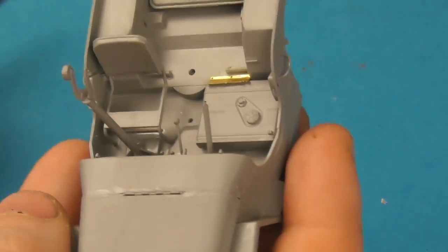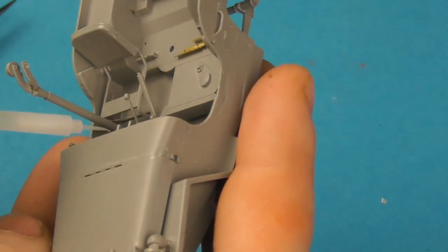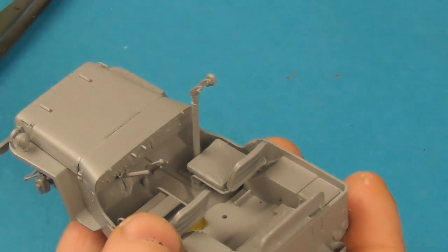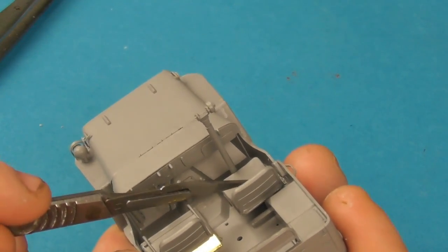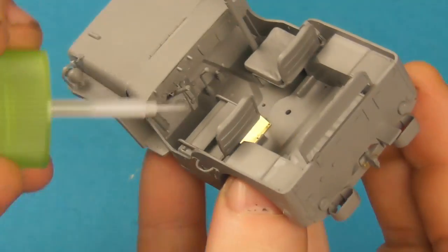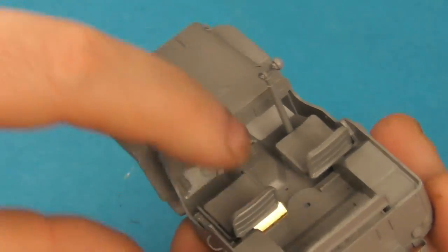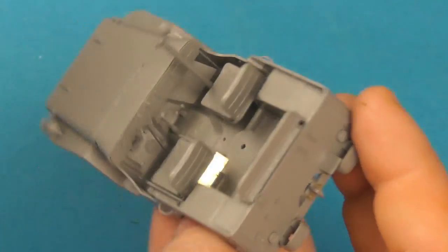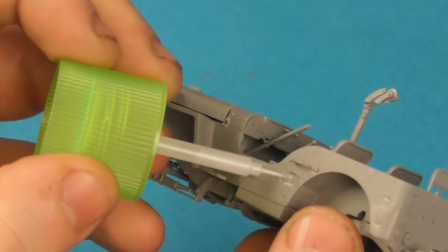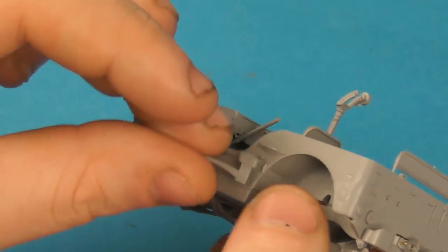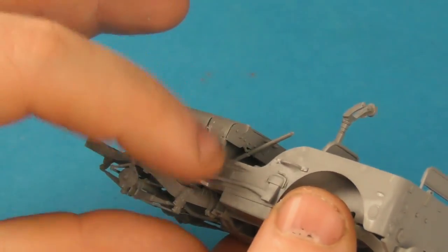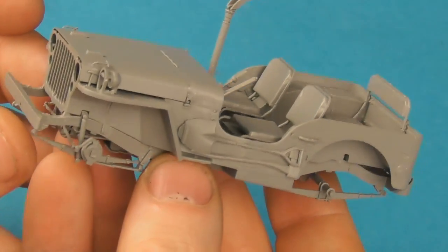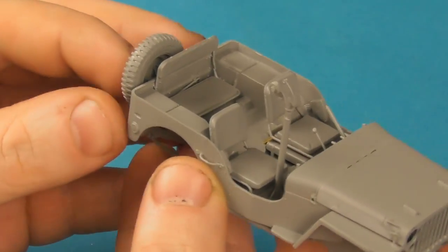So now I'm going to mount the seats in. So these are a little fiddly, it's quite a busy little interior. So again just taking your time to make sure things line up correctly before the glue sets is important. So now I'm mounting the pioneer tools. So we'll just get a simple axe and shovel assembly here. They're pretty well detailed. The bracket detail is pretty nice. There's no molded on proper kind of straps or tie downs so you could add them if you so wish. In this case I'm just going to mount them out of the box.